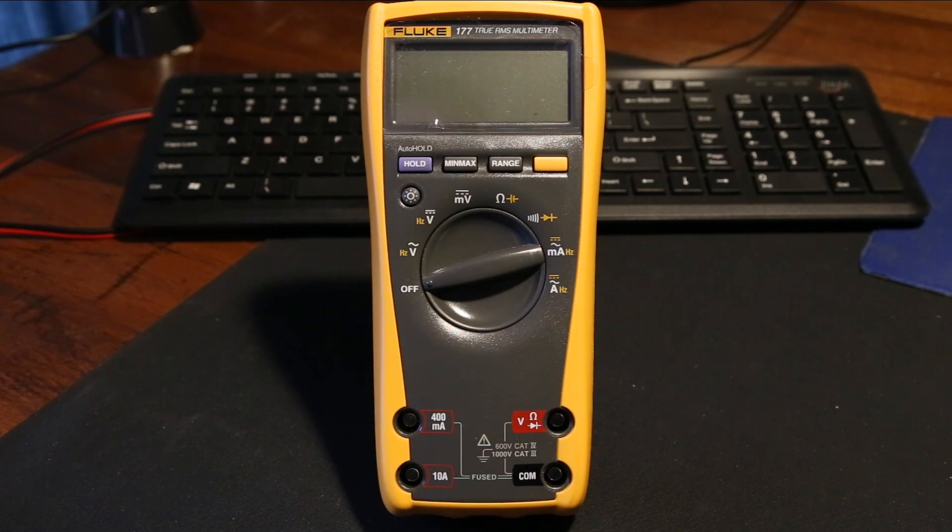The Fluke 177 is primarily aimed at electrical work as well as electronics work. Fluke calls it their entry into electronics multimeters. I say it is missing a few features for it to be a true electronics multimeter. Some of those features being duty cycle and true frequency measurements. And quite importantly is microamps as well, which is not featured on this specific meter.